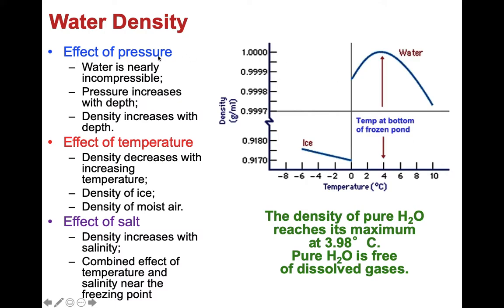What affects water density? First, the pressure — water is nearly incompressible, but you can compress water very slightly with increasing depth and increasing pressures. That increased pressure with depth is very important because it increases the density of water. Temperatures are very important for density profiles of ocean water — density in general decreases with increasing temperature. The density of ice is close to 0.91 and decreases with increasing temperatures.